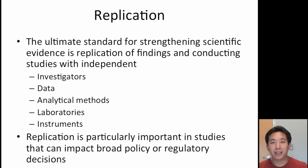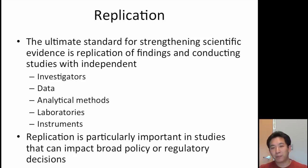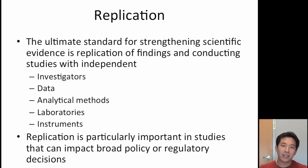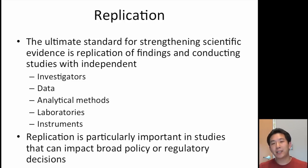The basic idea is that in science, replication is the most important element of verifying and validating findings that scientists discover. So if you claim that X causes Y, or that vitamin C improves disease, or that this causes a problem, what happens is that other scientists, independent of the original, will try to investigate that same question and see if they come up with the same result. And if lots of different people come up with the same result and replicate the original finding, then we can tend to think that the original was probably true and that this is a real relationship or real finding.